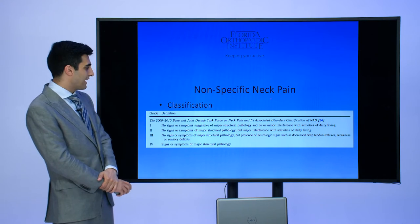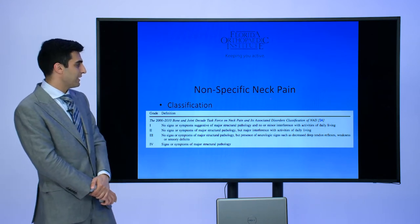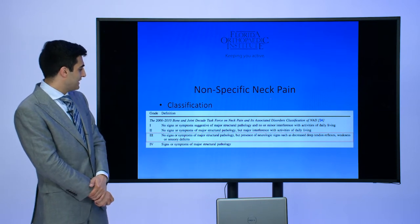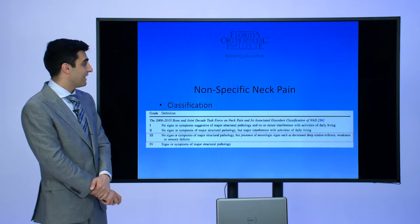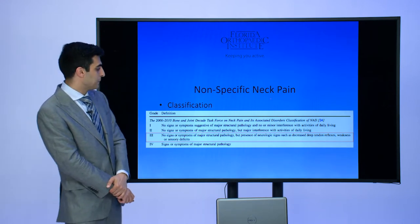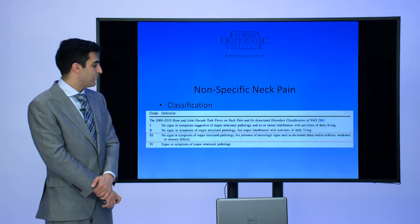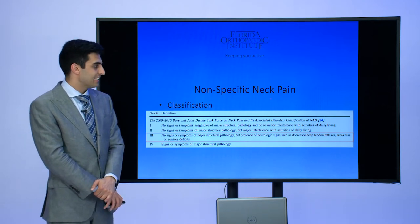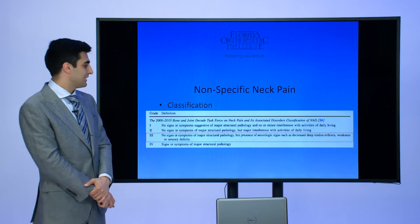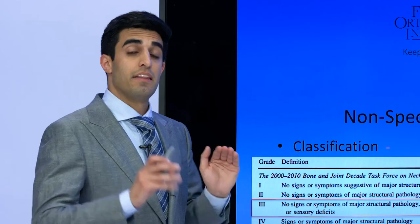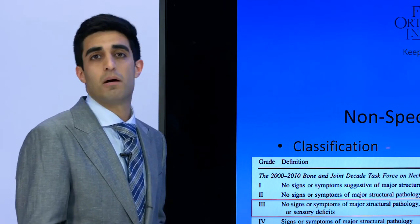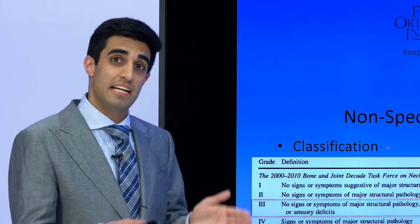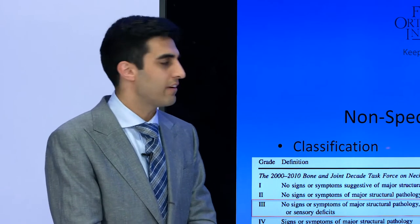There's a way to classify this, and the thing we really need to look out for is patients who have non-specific neck pain with no signs or symptoms of a major structural pathology but who have the presence of neurological signs such as decreased tendon reflexes, weakness, or sensory deficits. These are people that if they come into your clinic complaining of neck pain but have these other associated neurological signs, they should probably be evaluated further.